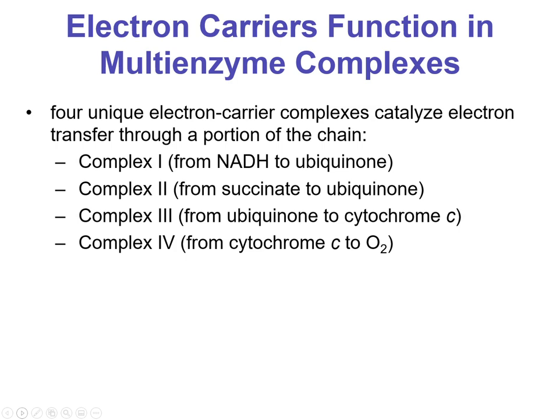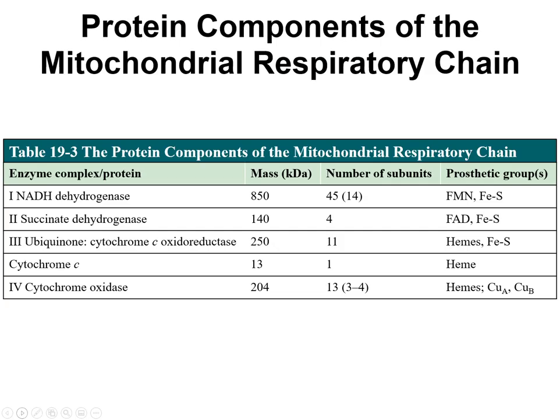There are four unique electron carrier complexes that catalyze electron transfer through portions of the chain: Complex I, II, III, and IV. I want you to appreciate just how large these complexes are. Complex I is 850 kilodaltons — that's 850,000 daltons — with 45 subunits and all types of prosthetic groups. These are very massive complexes just to move tiny electrons, but because electrons can do so much havoc if let loose, you need a lot of coordination and guidance.